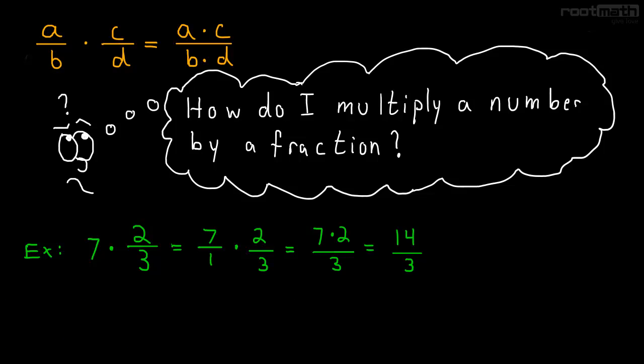Now this comes up so often we can single it out as its own special case. So we can write our own rule for a number times a fraction. a times c over d is equal to a times c over d.